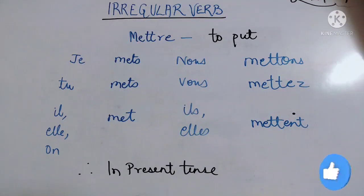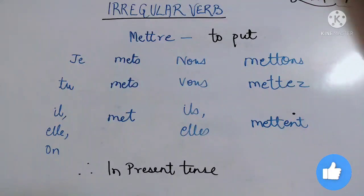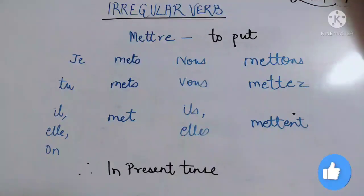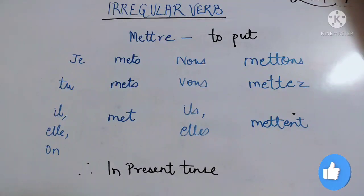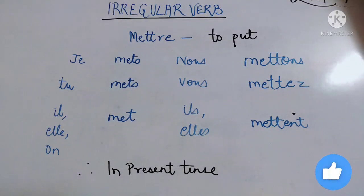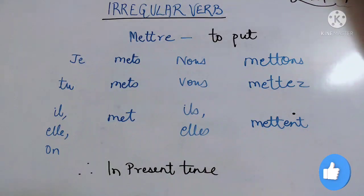For the subject pronoun 'je': 'je mets' — spelling is M-E-T-S — which means 'I put'. 'Tu mets' — M-E-T-S — means 'you put'. 'Il met' — spelling is M-E-T. Here you can see the S is not there.